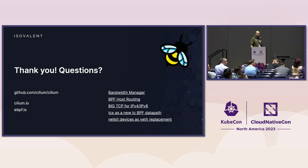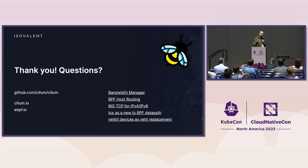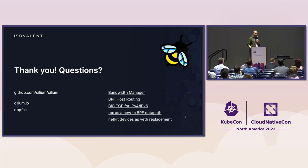Question: We're on Cilium 1.14.3. You said you could turn BigTCP on and off — what flag in the Helm values are we looking for? Answer: It should be in the Cilium documentation — there's a flag in Helm and I don't have it in my head right now, but I have it linked in the slides if you want to look it up.